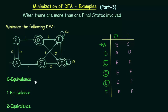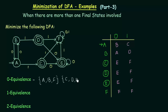We do this by starting off by writing the equivalences. Let's start with the zero equivalence. For zero equivalence, you have to just put the final states in one set and non-final states in another set. So let me first make a set of non-final states which are A, B and F. And the final states are C, D and E. When you put the non-final states and final states in two separate sets, that is how you are done with the zero equivalence.